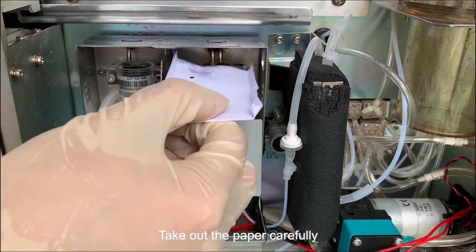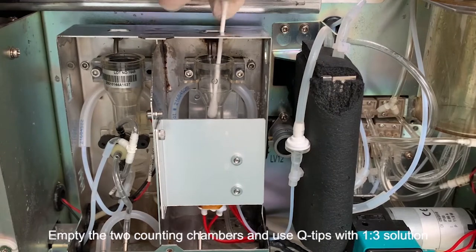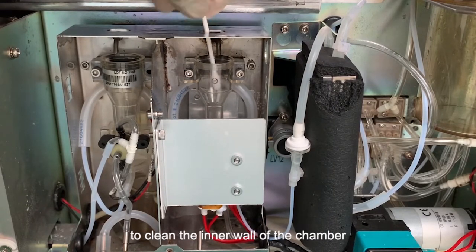Take out the paper carefully. Empty the two counting chambers and use q-tips with 1-3 solution to clean the inner wall of the chamber.